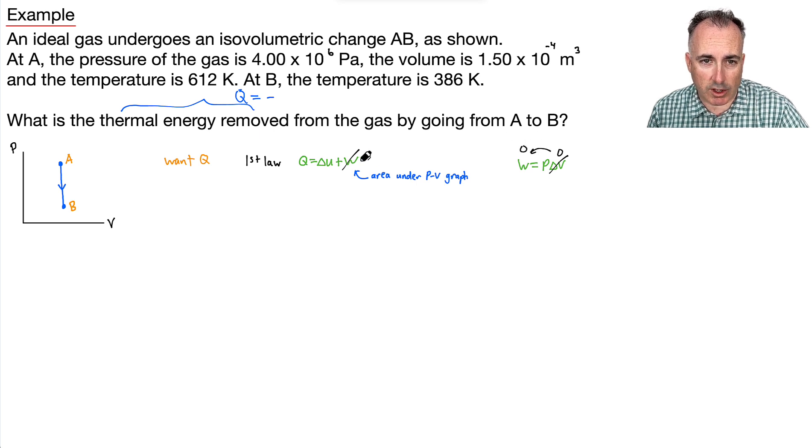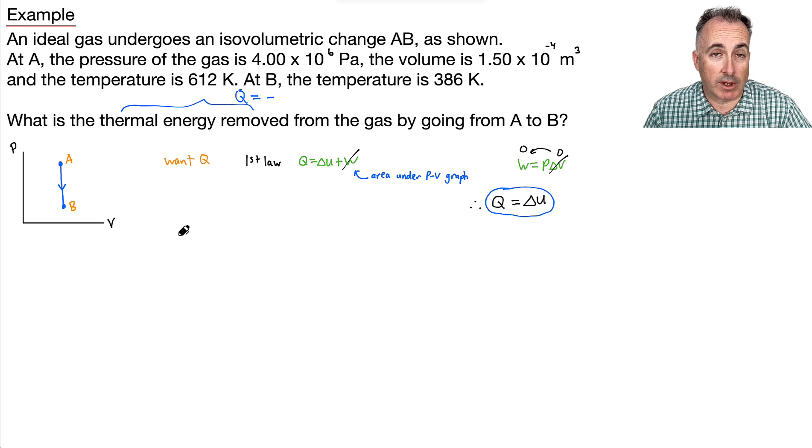So what this really means is that the work right here is going to be zero, and therefore, we can conclude something really important. We can conclude that Q, which is what we're looking for here, this thermal energy removed, is going to be just, if W is zero, it means it must be just delta U. In other words, a change in internal energy. So long as we can find this, we're going to be fine. So let's go and try to find out what is the change in internal energy.